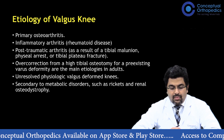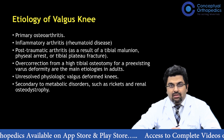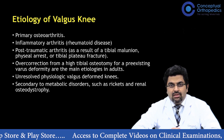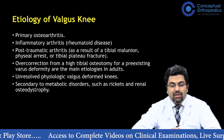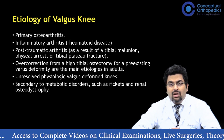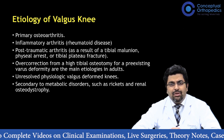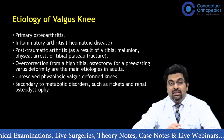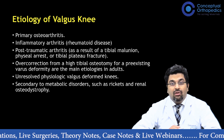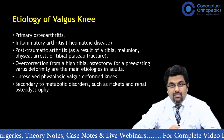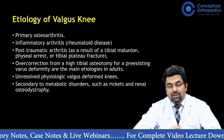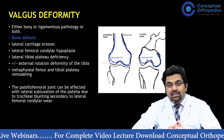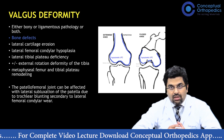What is the etiology of valgus knee? It can be due to primary osteoarthritis, inflammatory arthritis such as rheumatoid disease, post-traumatic arthritis as a result of tibial malunion, physeal arrest in childhood, or a tibial plateau fracture. It can also be due to overcorrection of a high tibial osteotomy — converting from a varus knee to a valgus knee — or unresolved physiological valgus deformity, and secondary to metabolic conditions like rickets or renal osteodystrophy.